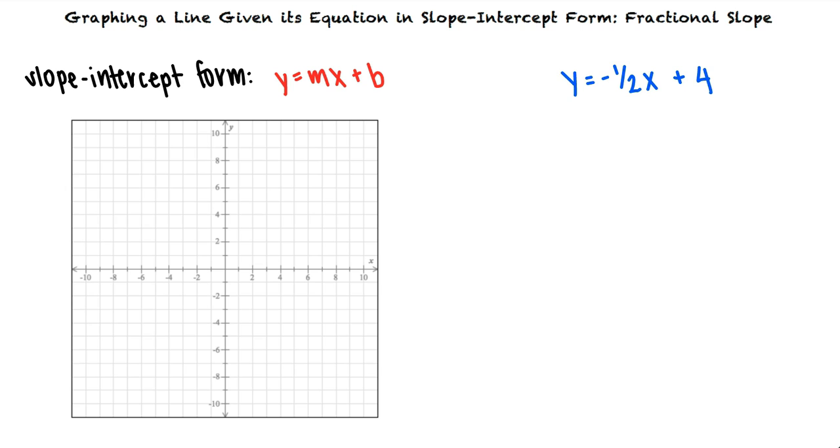Since we are multiplying x by negative one-half in our equation, choosing x values that are multiples of 2 will give us integer y values. Let's evaluate our equation for x equals 0, x equals 2, and x equals 4.